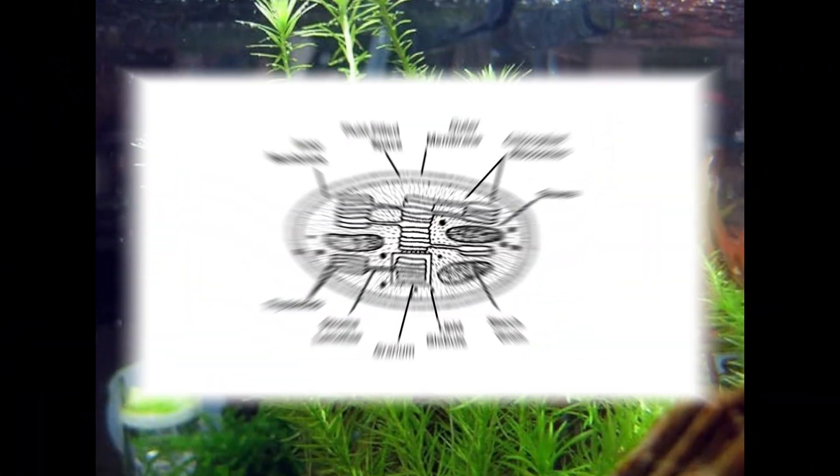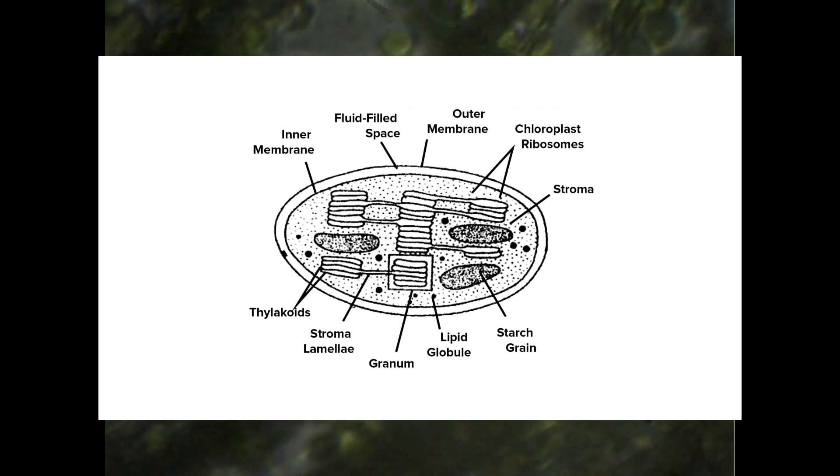Chloroplasts are the photosynthetic organelles in plant cells and algae cells. Plant cell chloroplasts are biconvex in shape. The size of the chloroplast usually varies between 4-6 micrometers in diameter and 1-3 micrometers in thickness.